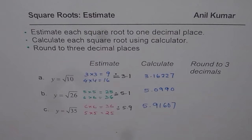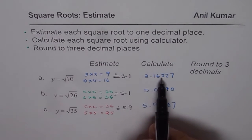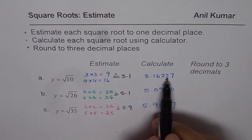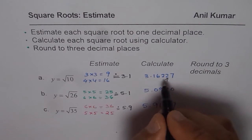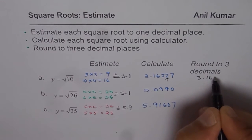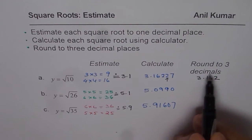Now let us round these calculated values to 3 decimal places. We have 3.16227. We check the fourth decimal place. If it is 5 or more, we round higher. Otherwise we leave it as is. This is less than 5, so we write 3.162 as our answer accurate to 3 decimal places.